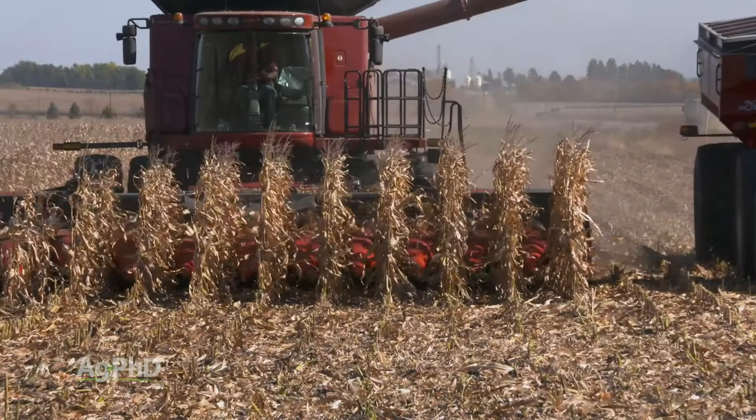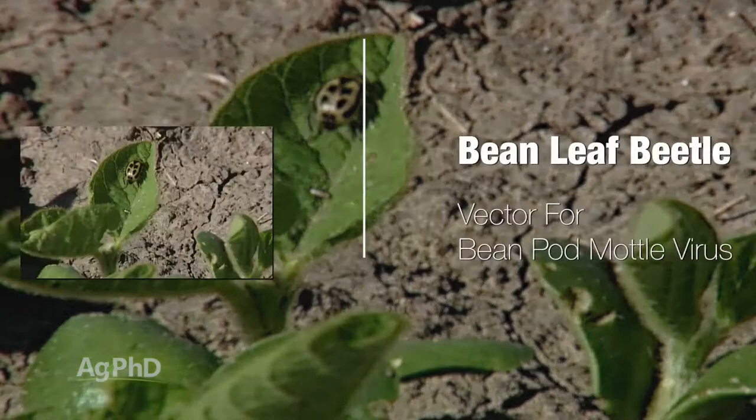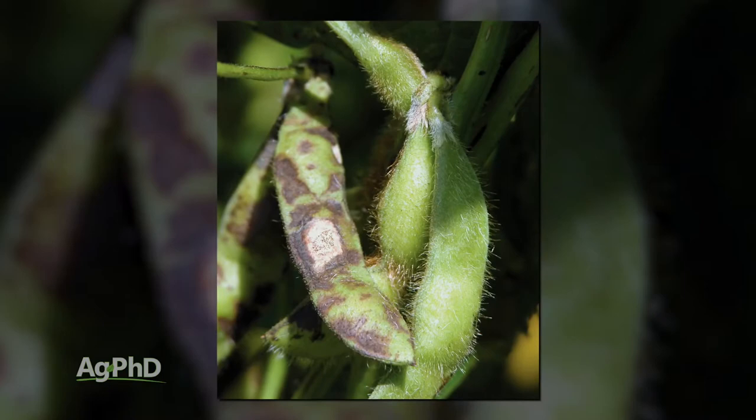The other thing that farmers will look at is some bugs can be a vector for disease, meaning they're carrying disease with them. Many times those diseases are not something that farmers want to see in the field, like bean pod mottle virus or barley yellow dwarf. If you see insects potentially carrying disease, many times that throws the economic threshold right out of consideration entirely because a farmer says they can't have any of those bugs in the field.